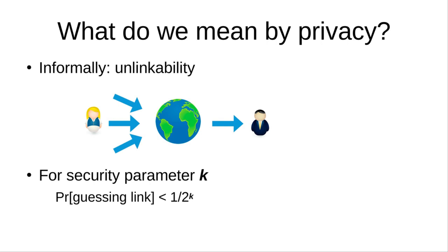What do we mean by privacy? Privacy can be roughly defined as a kind of unlinkability. In this diagram, suppose Alice is one of the senders of a message to Bob, and a lot of people are sending such messages with different receivers. When we look at the message that Bob received, the probability that some outsider can guess that Alice was the sender should be less than one over two to the k, for some security parameter k decided by Alice. That is roughly what we would like to get from privacy.